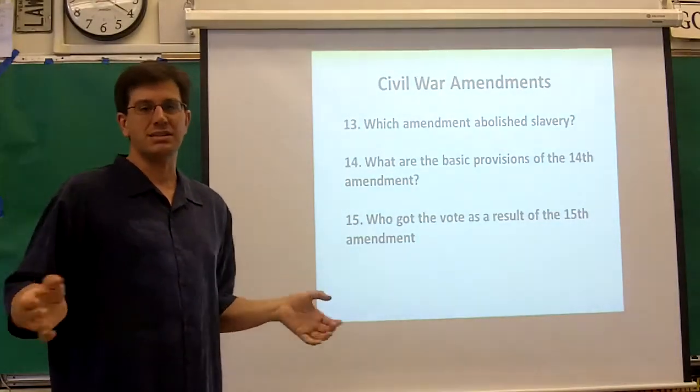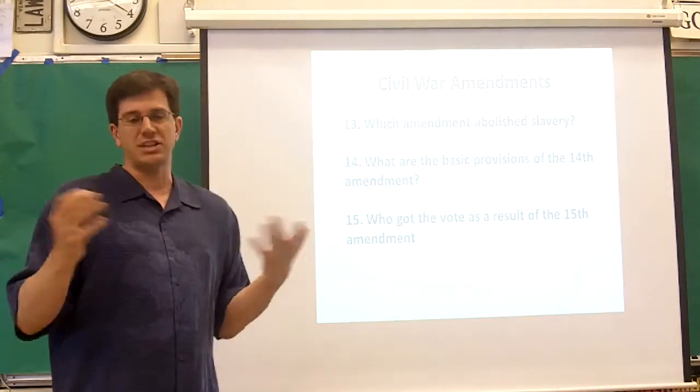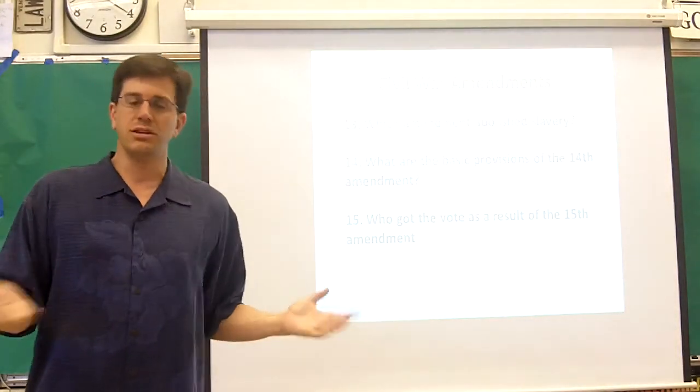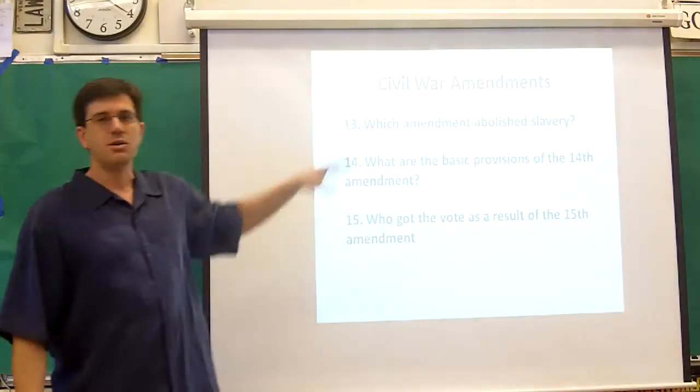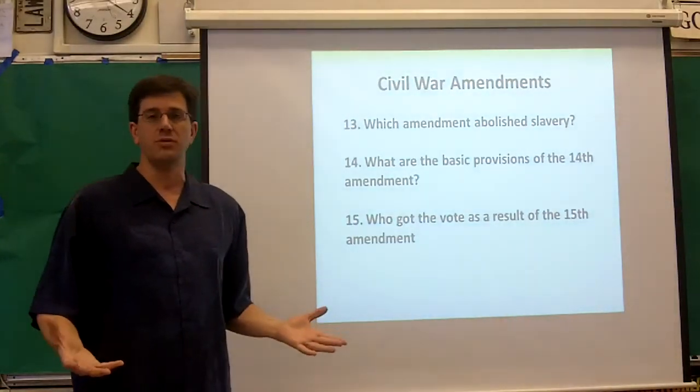And then they came up with poll taxes, a fee. Everyone, it applies to everyone equally. Or literacy tests. It applies to everyone equally. If you can't prove you're literate, you can't vote. But all of those are ways to get around the Civil War Amendments, which were extensions of civil rights to black citizens after the Civil War.